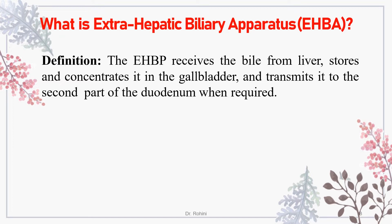What is the extrahepatic biliary apparatus? The biliary or excretory apparatus of the liver refers to the passages through which hepatic bile and gallbladder bile are conveyed into the second part of the duodenum. This apparatus is divided into two parts: intrahepatic and extrahepatic. The intrahepatic part, covered in liver histology/anatomy, includes bile canaliculi, bile ductules, and right and left hepatic ducts. These right and left hepatic ducts join together and form part of the extrahepatic biliary apparatus. Its function is to receive bile from the liver, store and concentrate it in the gallbladder, and transmit it into the second part of the duodenum whenever required.